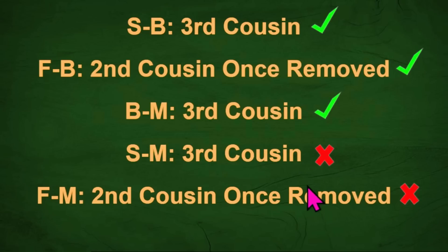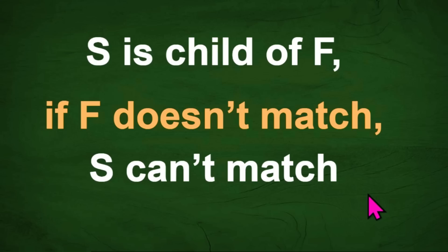So one solution is that there is one generation between D and M — in other words, D is the grandparent of M. Because Cosmic Slice is a child of her father, if the father doesn't match, she can't match. If one generation is possible, then two generations is also possible, because that makes the relationship even further apart — changing third cousins to third cousins once removed, and second cousin once removed to third cousins.